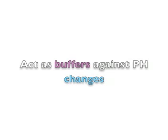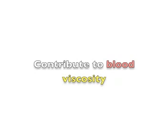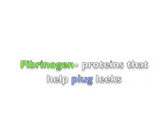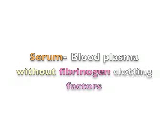Plasma proteins act as buffers against pH changes and also contribute to blood viscosity. Immunoglobulins are proteins that help fight viruses, while fibrinogens are proteins that help stop blood leaks. Serum is blood plasma without fibrinogen clotting factors.